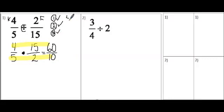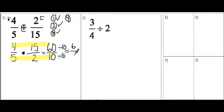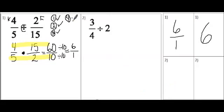So 4 times 15 gives us 60 for our new numerator, and 5 times 2 in the denominator gives us 10 for our new denominator. Step four is to simplify. I see that 60 and 10 both end in 0, so I can divide the top and bottom by 10. 60 divided by 10 equals 6, and 10 divided by 10 is equal to 1. So 6 over 1, or 6 wholes, is how we would write that in fractional form. And when we change our improper fraction to a whole number for step 5, 6 wholes can also be written as just 6.